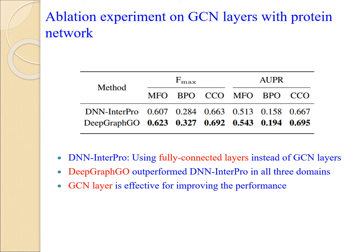The main feature of DeepGraphGO is the GCN layers for the input protein network. Instead of the GCN layer, we also trained representation vectors using only a fully connected layer for the input InterPro feature vectors — we call this alternative DN-Interpro. This table reports that DeepGraphGO outperformed DN-Interpro in all three domains, indicating that the GCN layer in DeepGraphGO is effective for improving AFP performance.